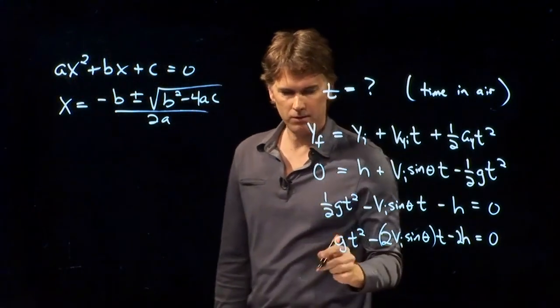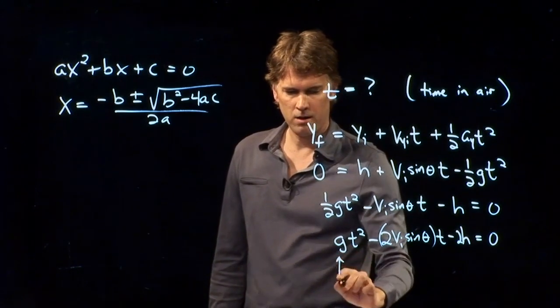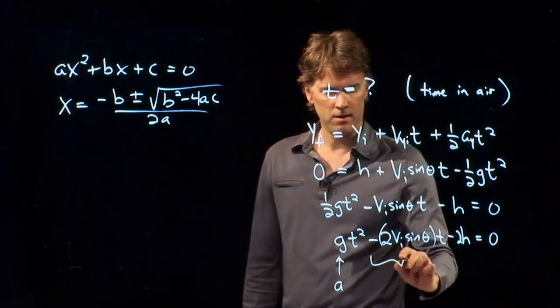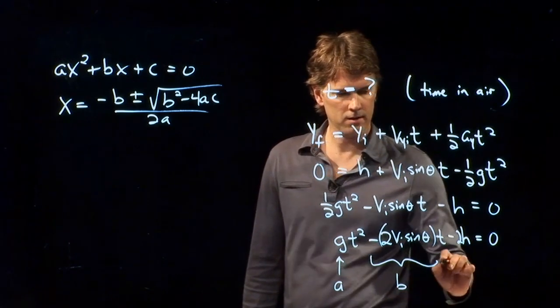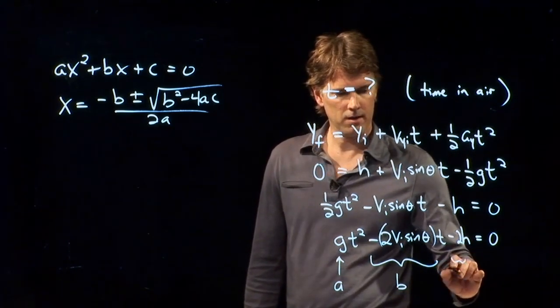Remember what a quadratic equation looks like. A quadratic equation usually has the form AX squared plus BX plus C equals zero. And you probably remember what the solution is, the quadratic formula.